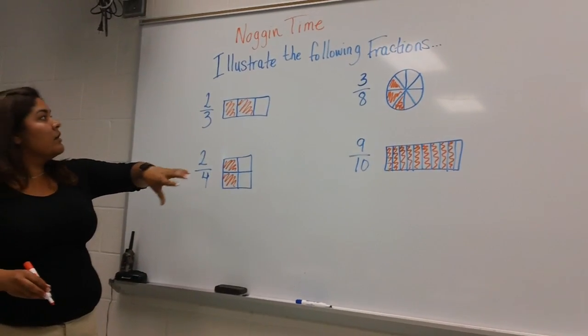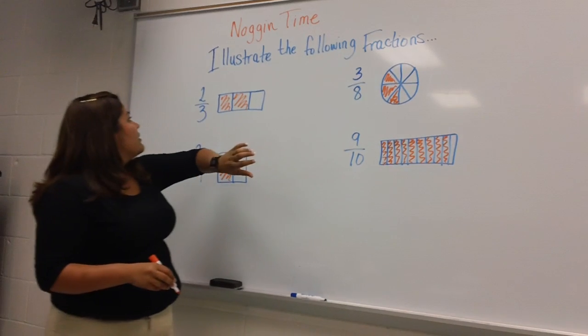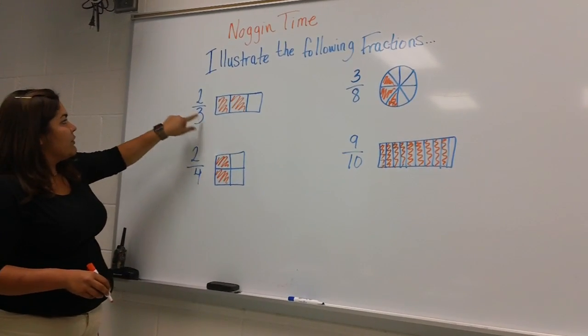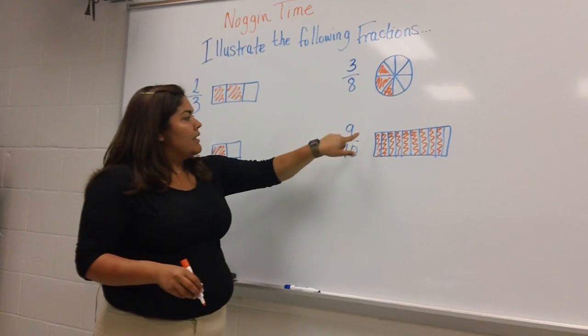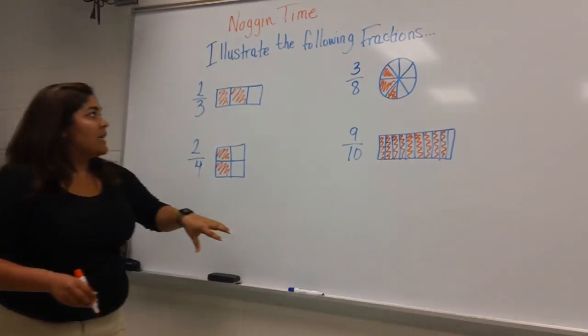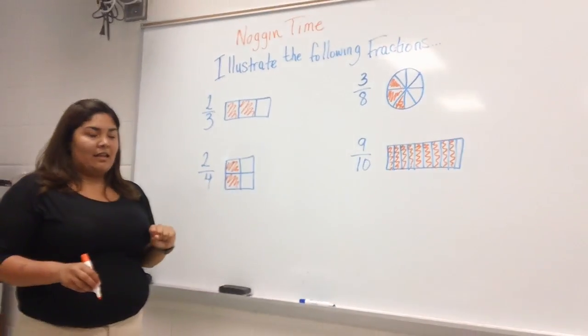So on your paper, you should have something similar to these illustrations to illustrate our fractions. We have two-thirds, two-fourths, three-eighths, and nine-tenths. Take a look at your paper and it should resemble this. Thank you very much guys.